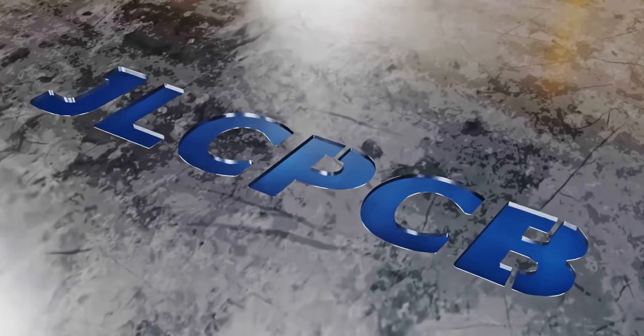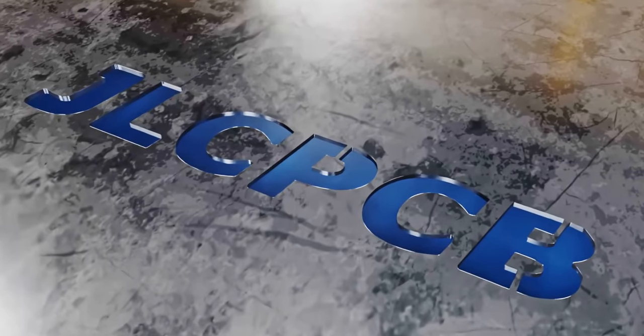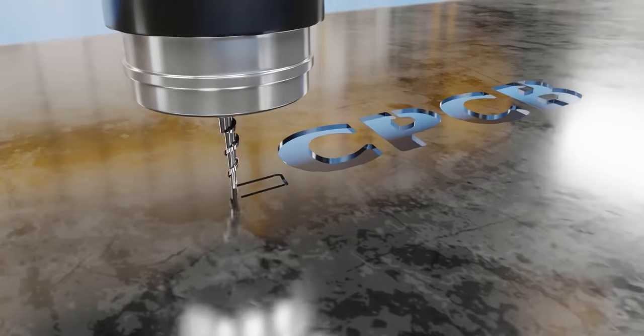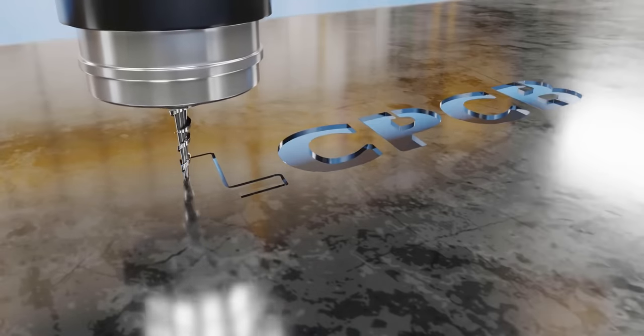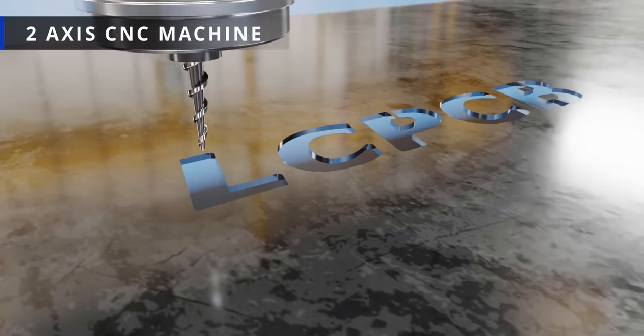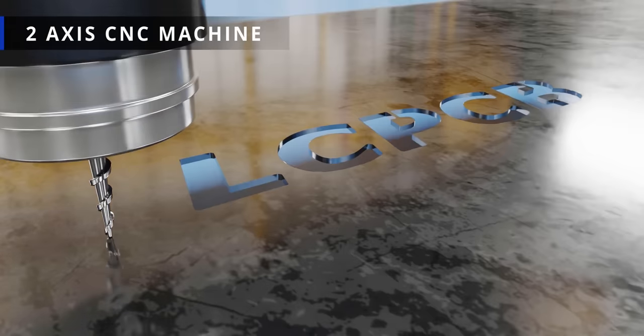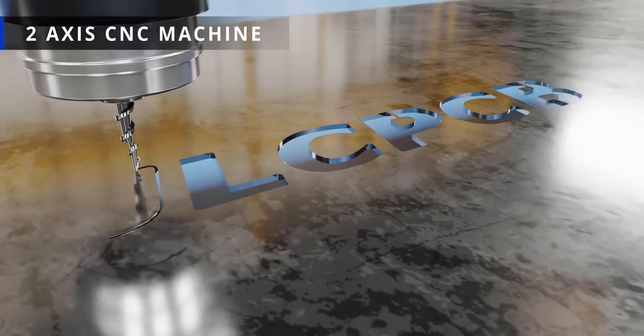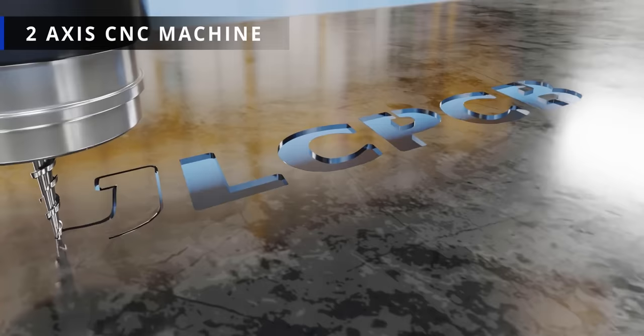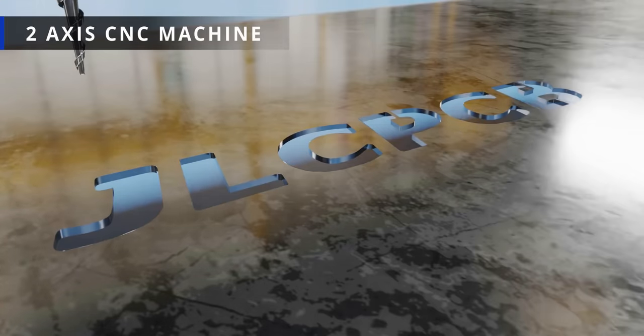Suppose you want to engrave this logo on a steel plate. At a glance, it seems that the tool motion needed to make this engraving is simple, requiring only two dimensions. Just by moving the tool in X and Y directions, we can perfectly achieve this engraving. Such CNC machines are known as 2-axis machines.